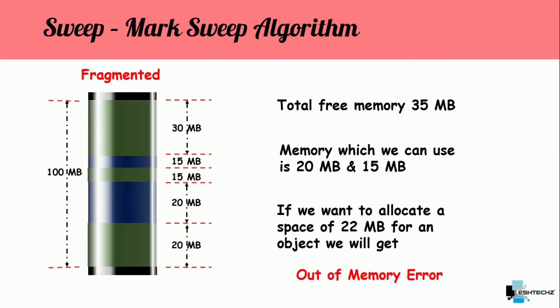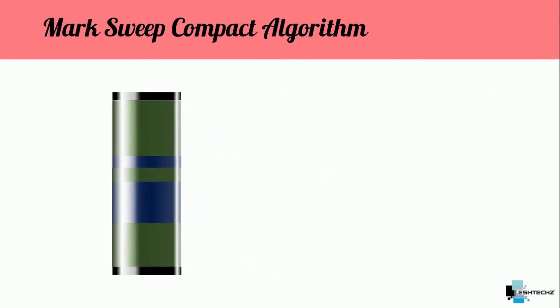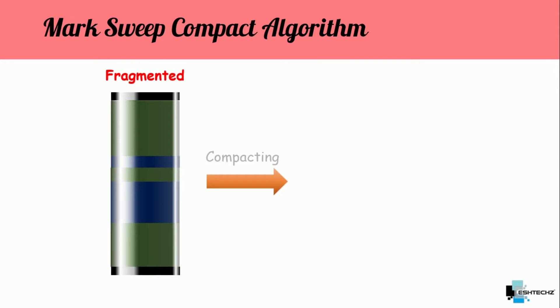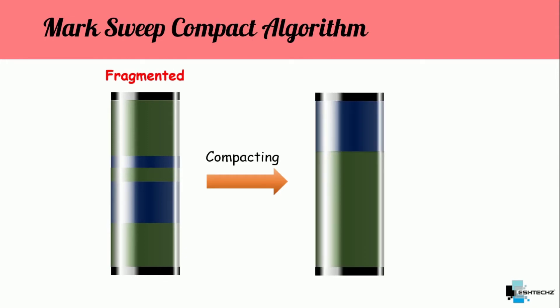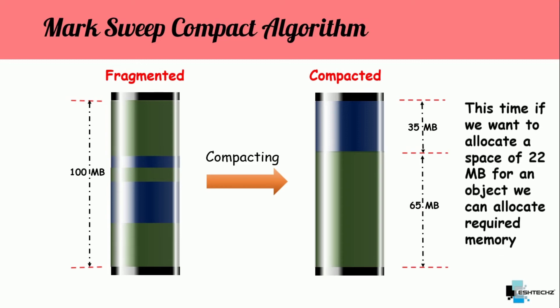This problem is solved by mark sweep compact. Mark sweep remains the same — the only difference comes in the compacting phase. The fragmented memory goes into the compacting phase, and after compacting, the live objects are moved to one side and the free memory is on the other side. This gives us consecutive memory. Now we have 35 MB of consecutive free memory, so if we again want to allocate 22 MB for an object, we would be able to allocate that required memory. So this is the compacting phase of mark sweep compact — one step ahead of mark sweep.